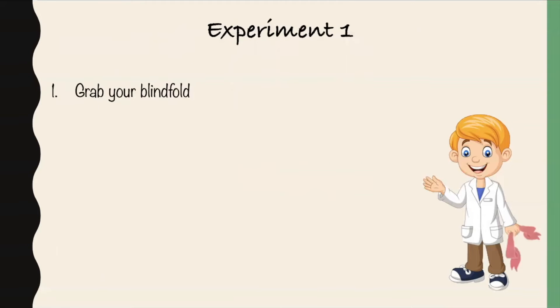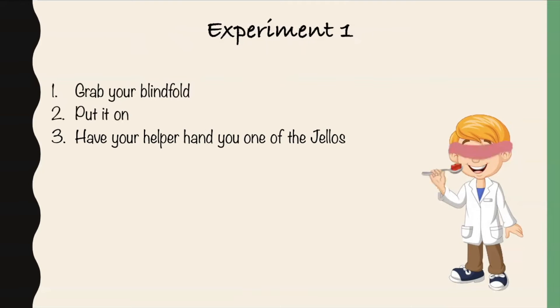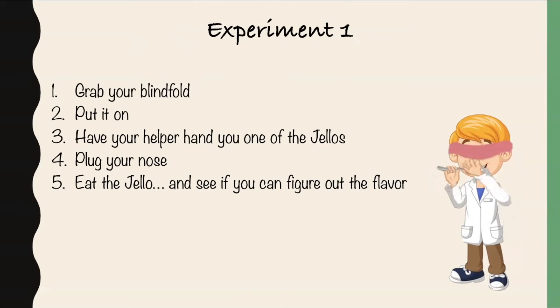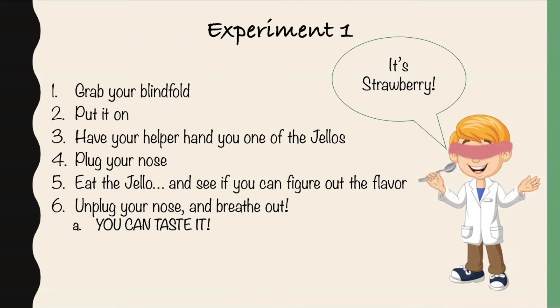So first, Brainiac is going to grab his blindfold and put it on. Next, he's going to have his parent or helper give him a spoonful of Jell-O, but he doesn't know which flavor. He's then going to plug his nose and eat it, and see if he's able to correctly guess the flavor of Jell-O. As you can see, it's a little hard, since he only has taste to go off of. Then, he's going to unplug his nose and breathe out. And suddenly, he can taste it and knows that it's strawberry.